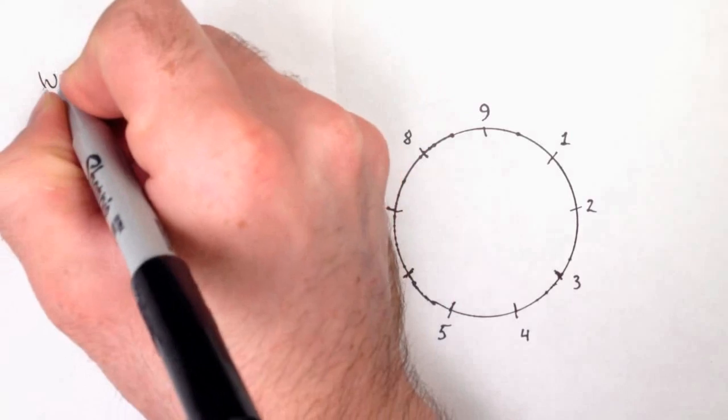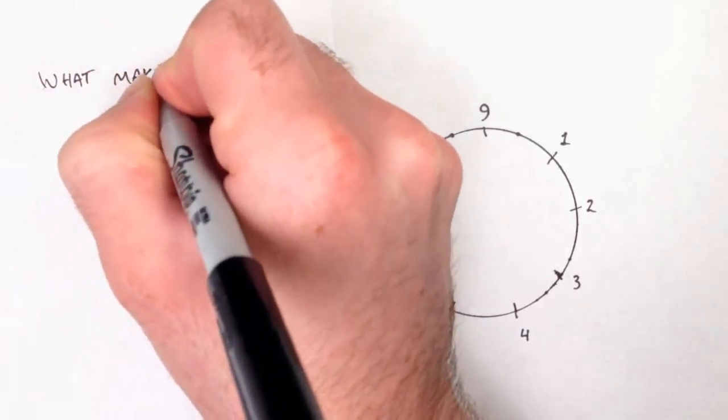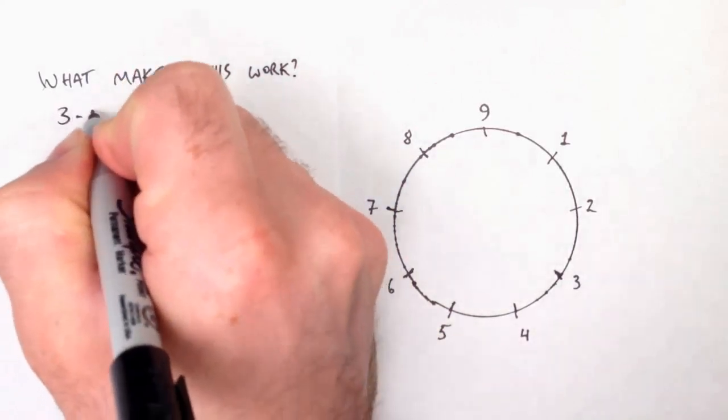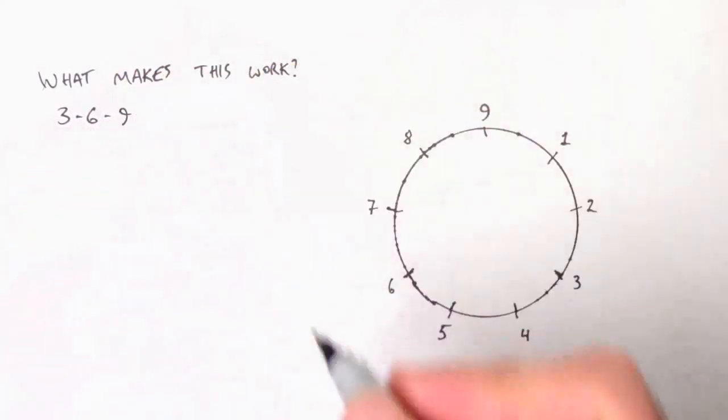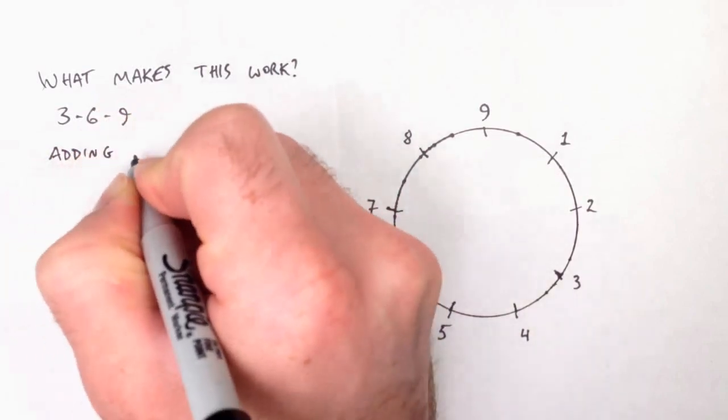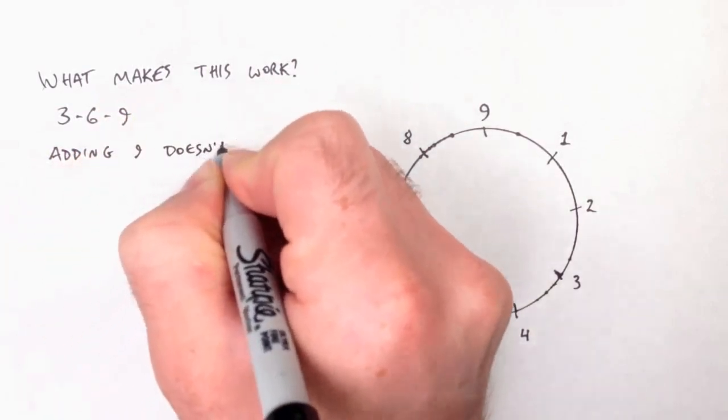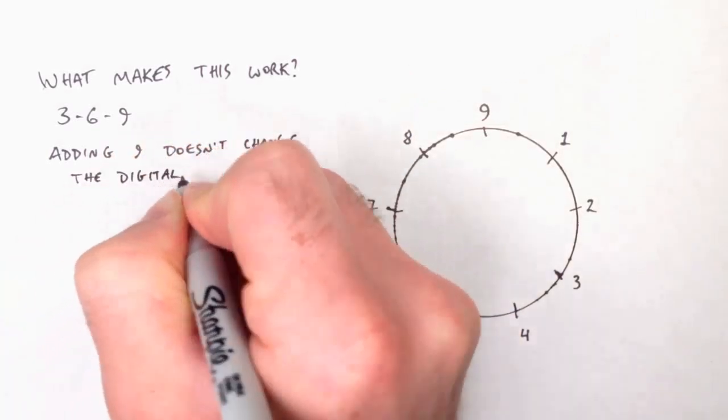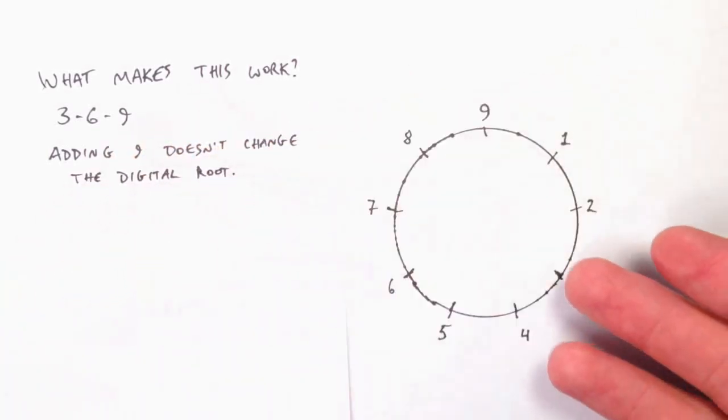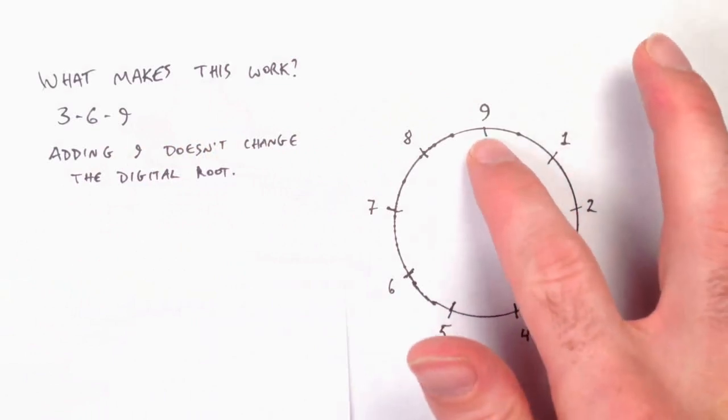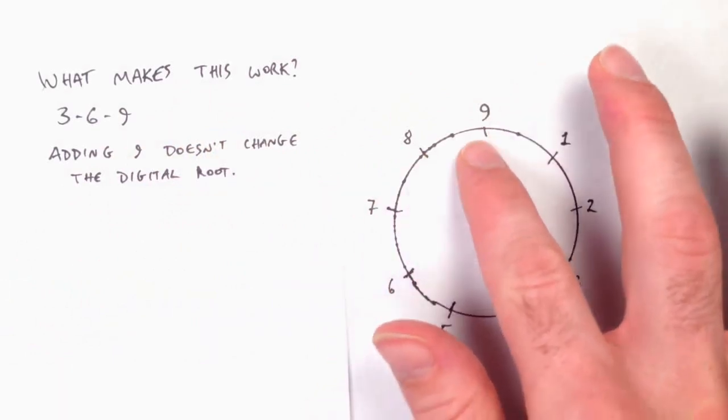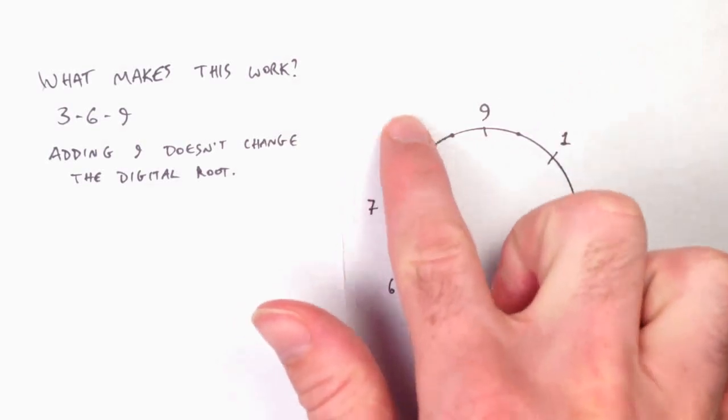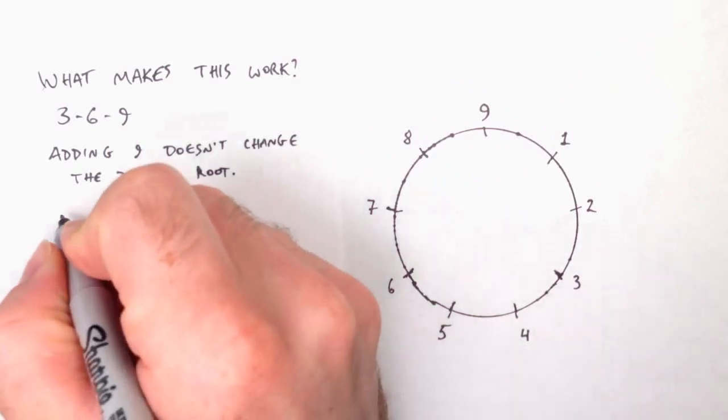Now that I've explained what vortex-based mathematics is, let's talk about what makes it work. First, the 3, 6, 9 group. 9 is only special because adding 9 doesn't change a digital root. There's nothing special or mysterious about 9. This is just a property of the decimal base 10 system. There are only 9 digital roots to choose from here, so if you start at 9, and then move 9 around the circle, you end up exactly where you started. It doesn't matter where you start from, but the multiples of 9 start at 9 and are trapped there forever.